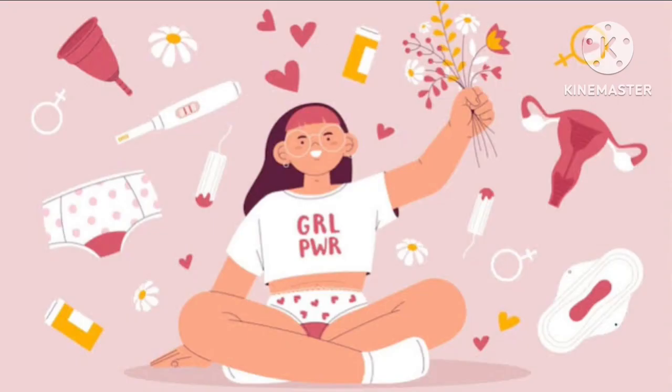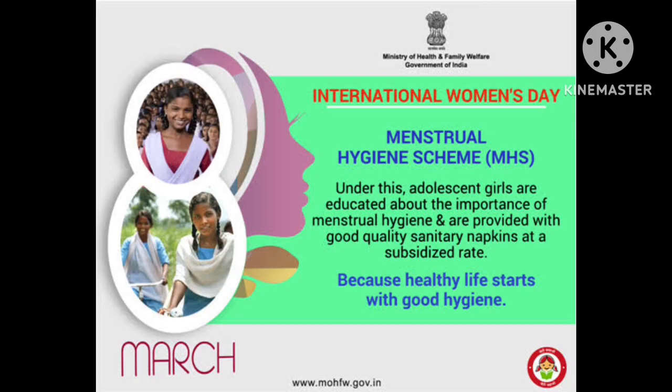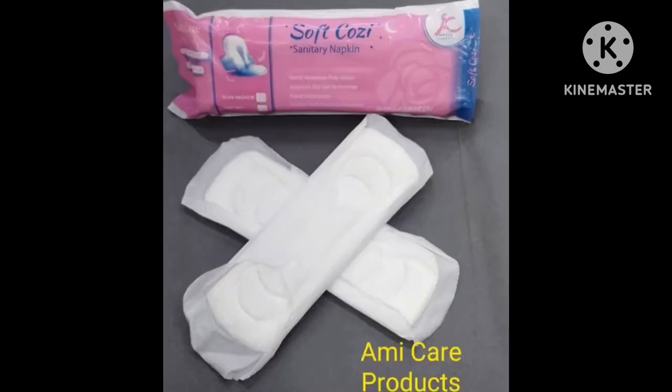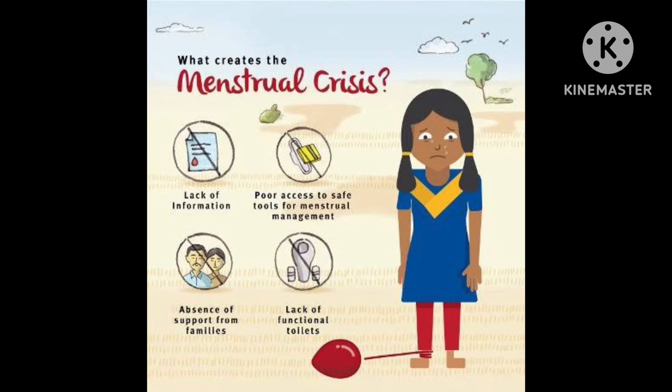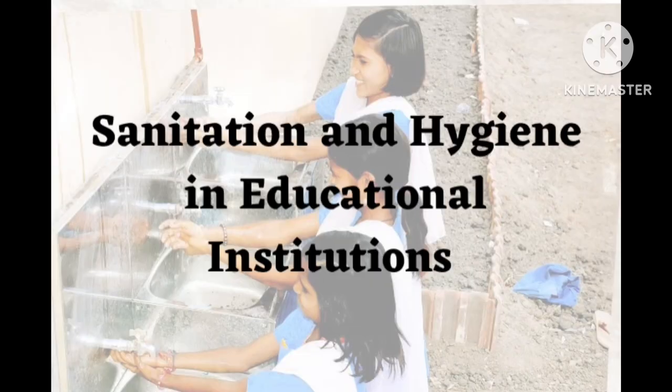Menstrual hygiene is another important aspect. Under the menstrual hygiene scheme, adolescent girls are educated about the importance of menstrual hygiene and are provided with good quality sanitary napkins. Menstrual hygiene is essential because menstruation often causes hindrances for school-going or college-going girls from attending schools or colleges. This is it on sanitation and hygiene in education institutions. Thank you.